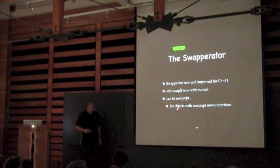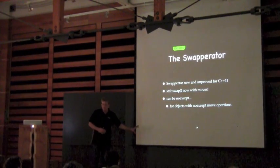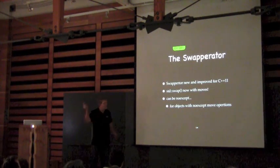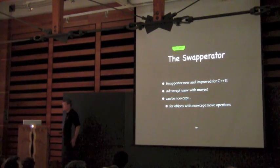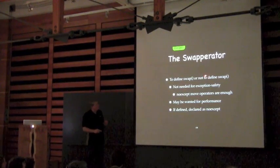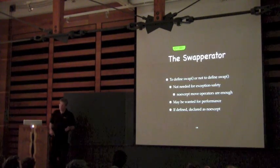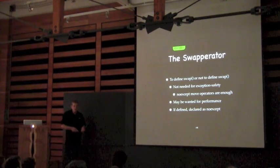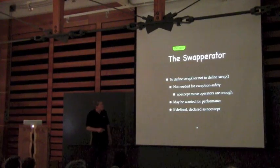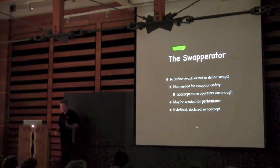Standard swap can be no-except if our move assignments are no-except. In other words, in C++11 we don't need to worry about swap anymore — as long as we have moving operations for our class defined as no-except, the standard swap will do exactly what we want. Does that mean we don't want to define swap? I didn't say we don't want to, I said we don't need to. However, for performance reasons, you may want to define swap, and if you do, make sure it's declared no-except.